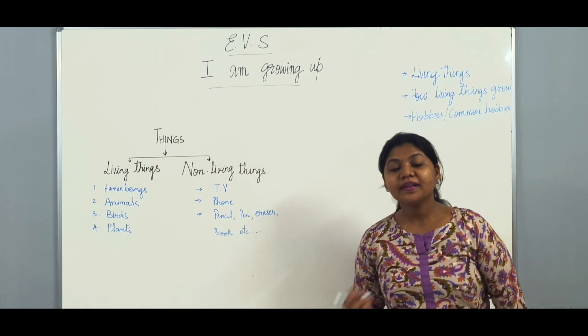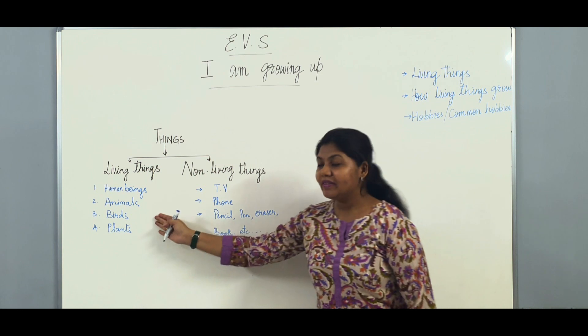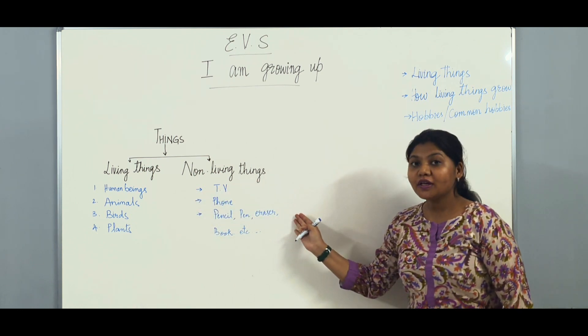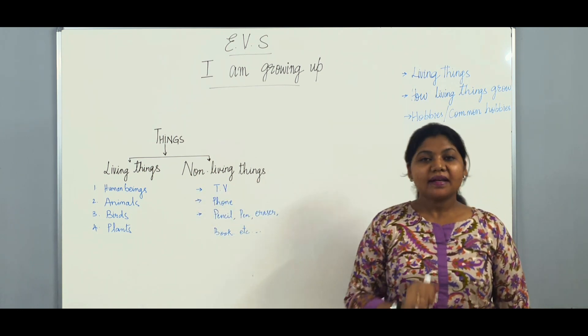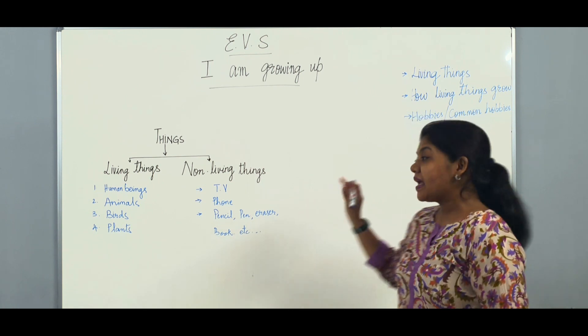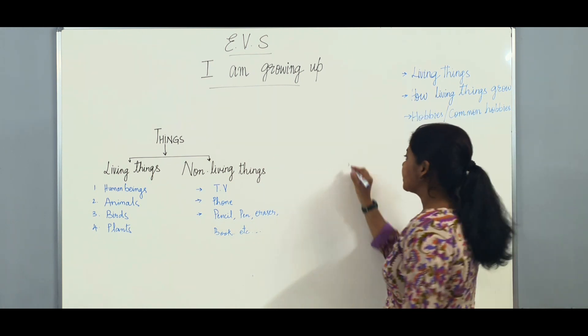So, how do we differentiate what are living things and what are non-living things? There are a few characteristics which can easily differentiate between these two things.